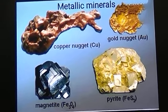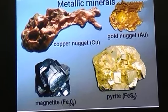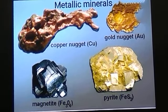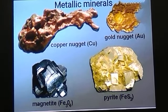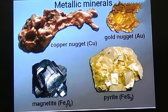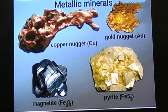In this picture we can see gold, pyrite which means iron, magnetite, iron and copper. Nugget is copper. All these are different types of metallic ores which are used for making jewellery.